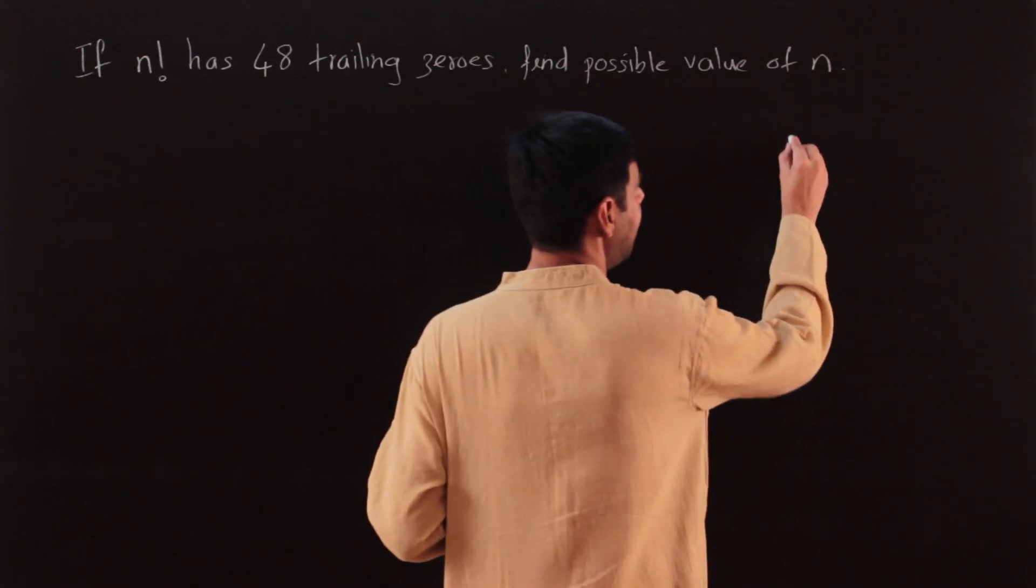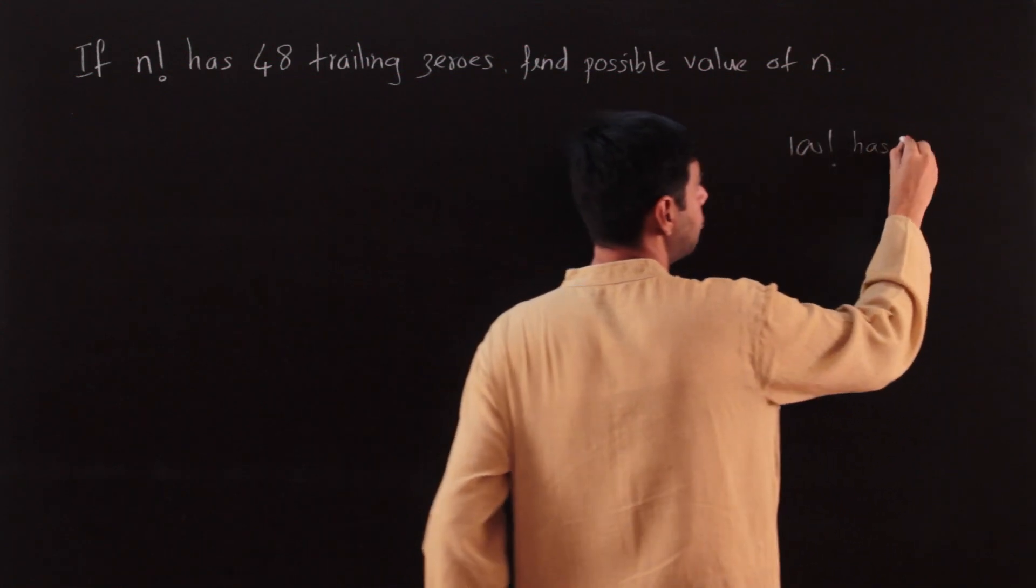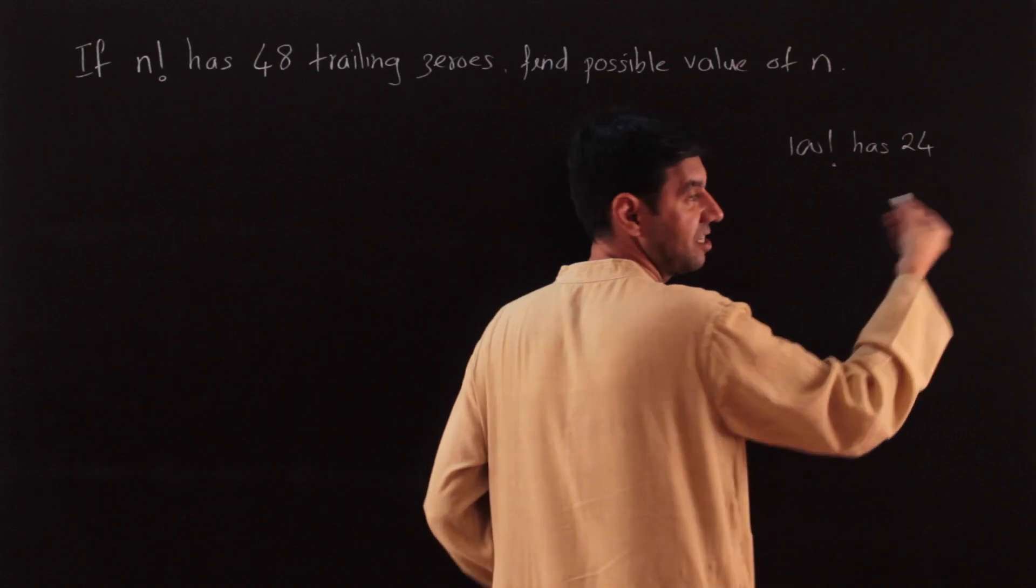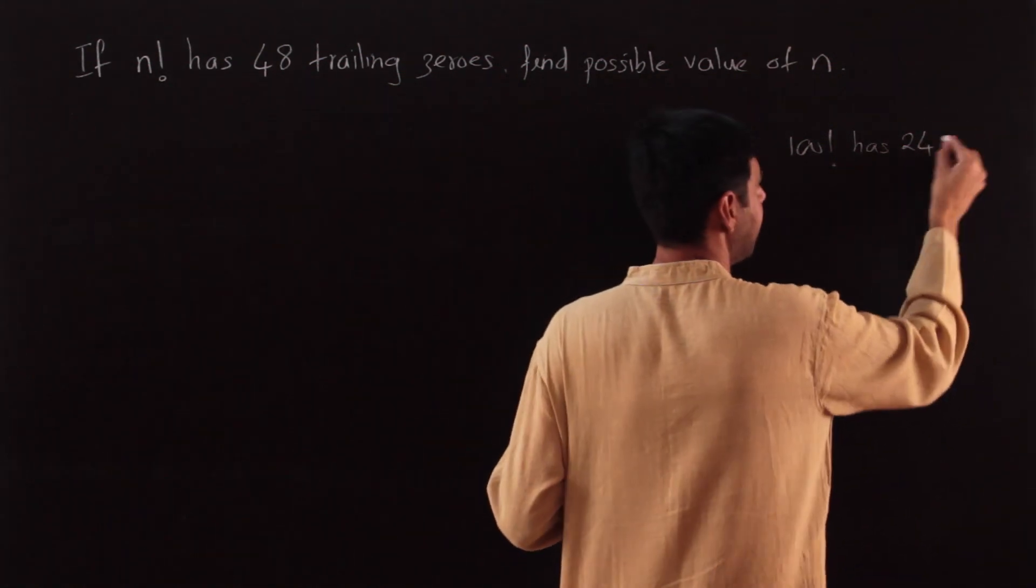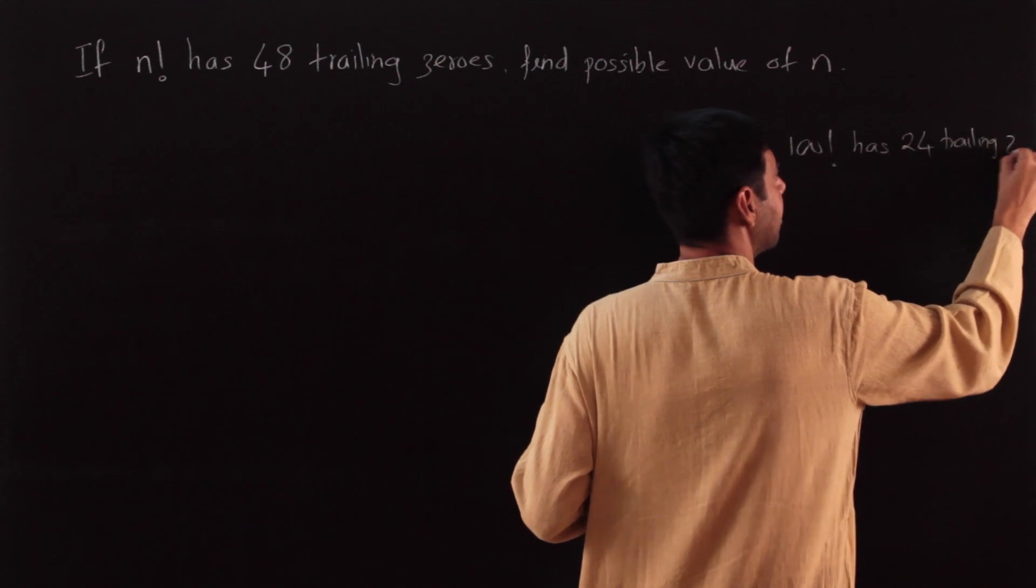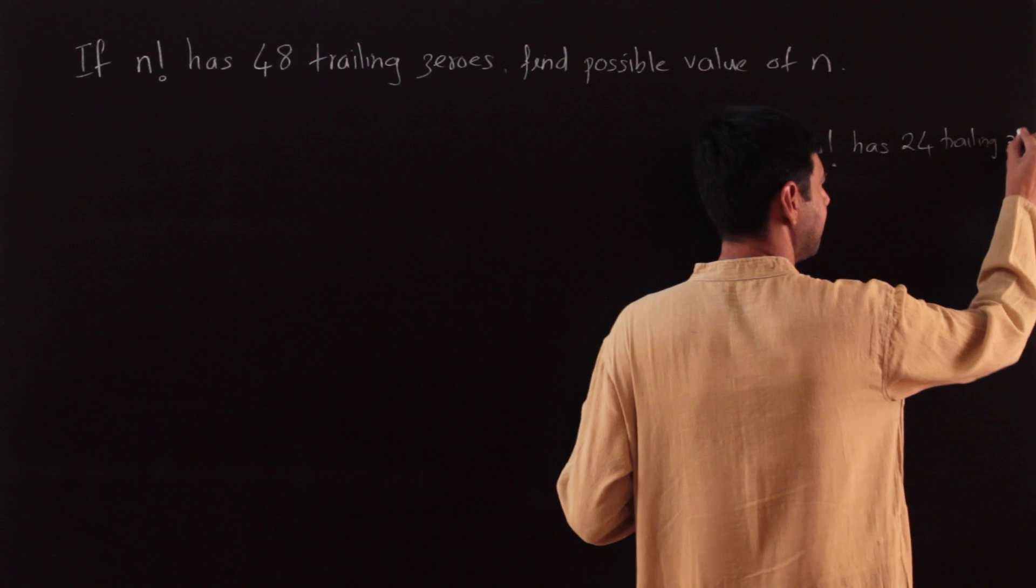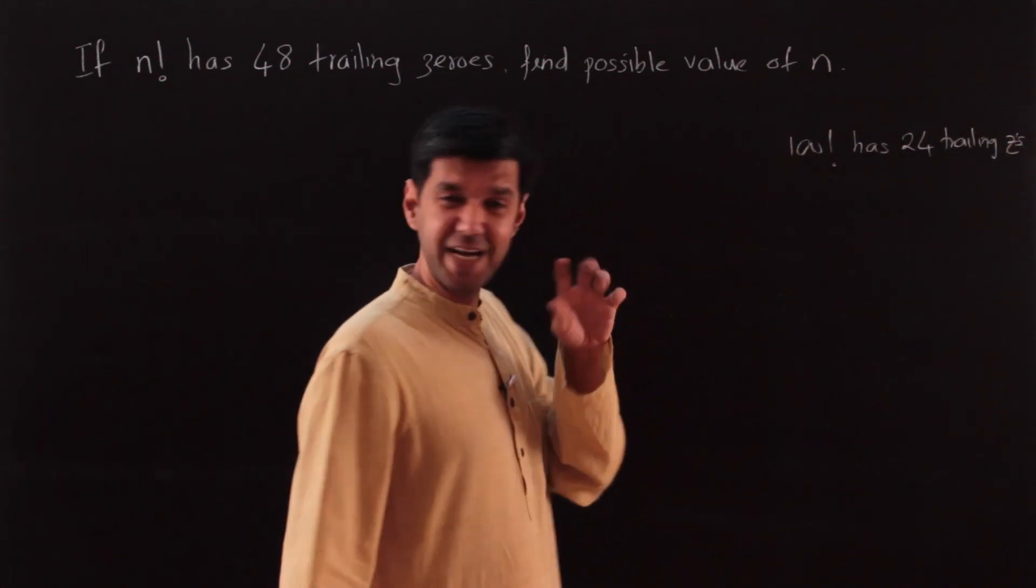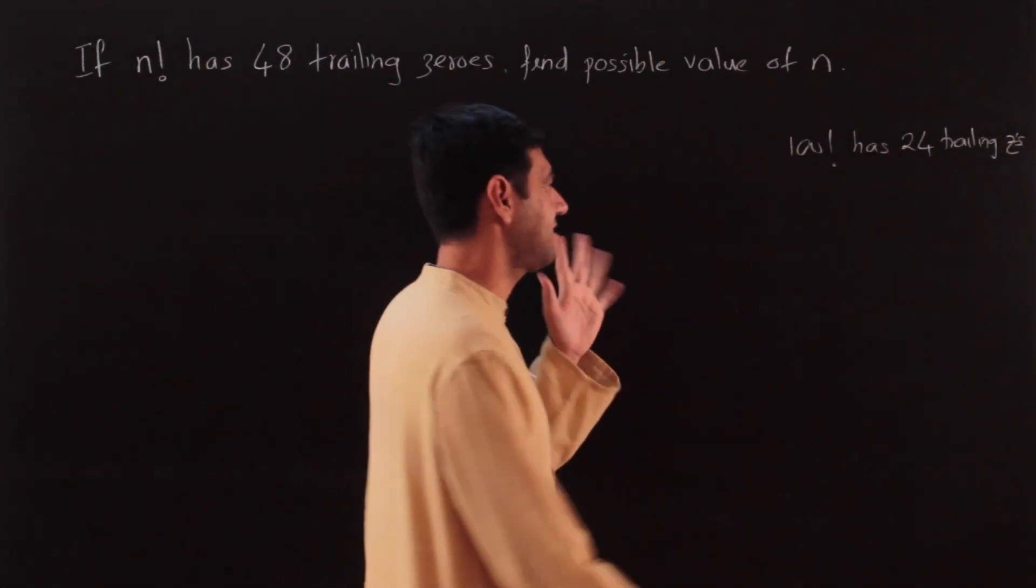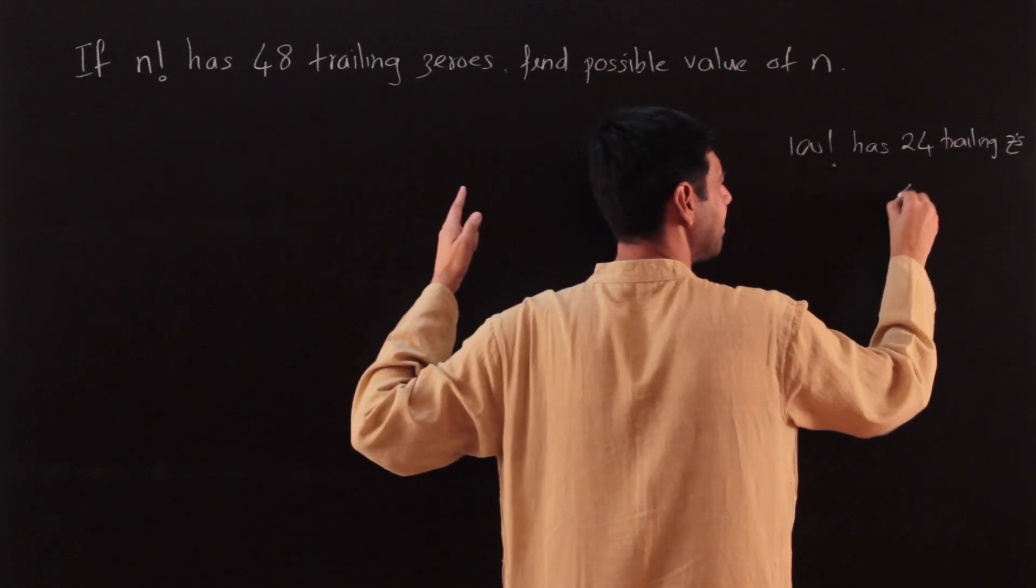Thankfully, I asked you to memorize that 100 factorial has how many zeros. It should be a part of your preparation itself. You should know it from memory: 100! has 24 trailing zeros. I might conjecture: I need 48 trailing zeros, so is it going to be 200 factorial?